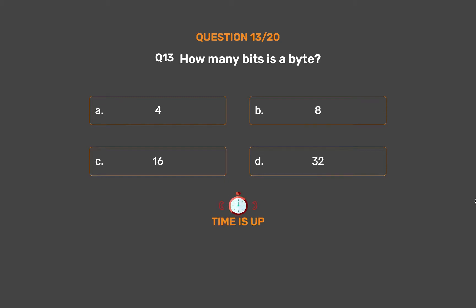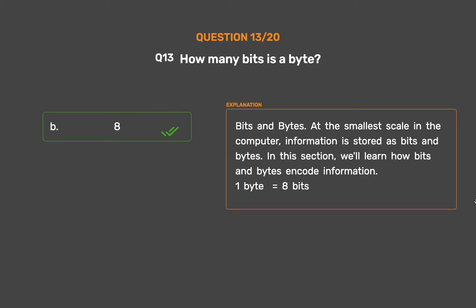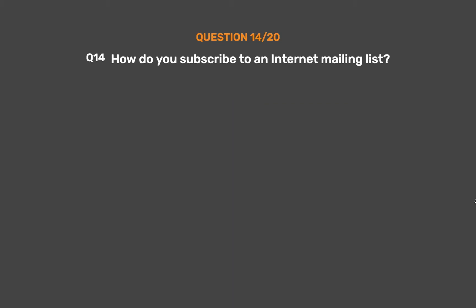The correct answer is Option B: 8. At the smallest scale in the computer, information is stored as bits and bytes. In this section we'll learn how bits and bytes encode information. 1 byte equals 8 bits.